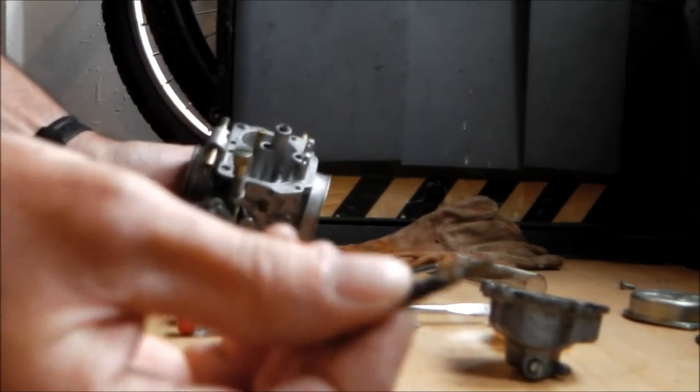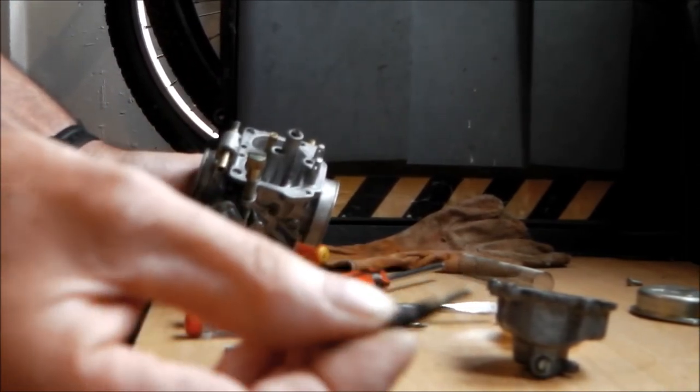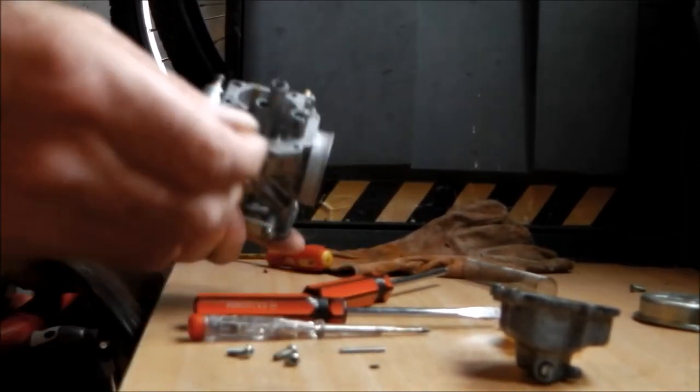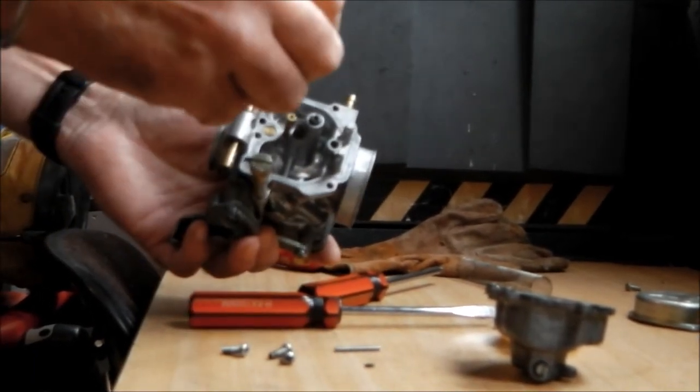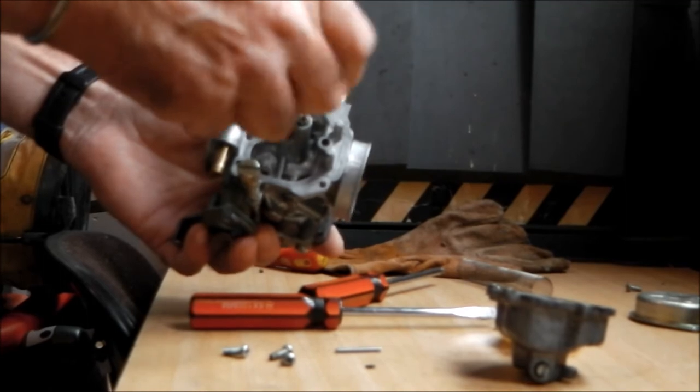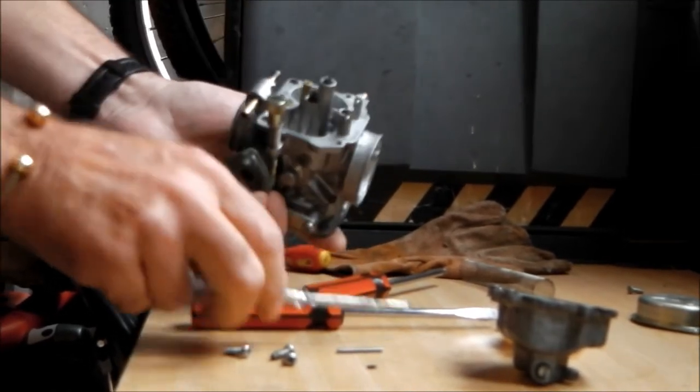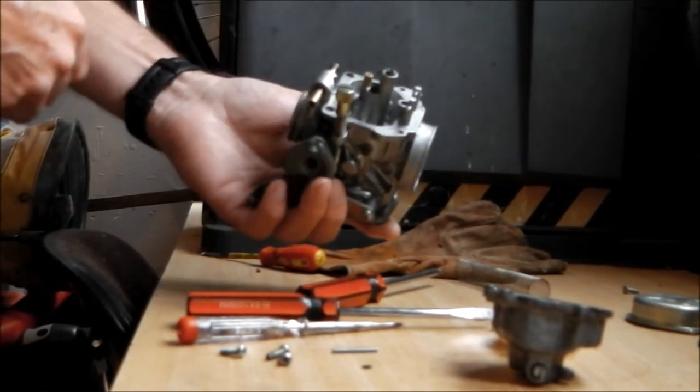Then your idle jet, which is this one. Put the longer bit on. Make sure it's all nice and clean. That goes in there next to it. Screw that down. That's your jets back in.